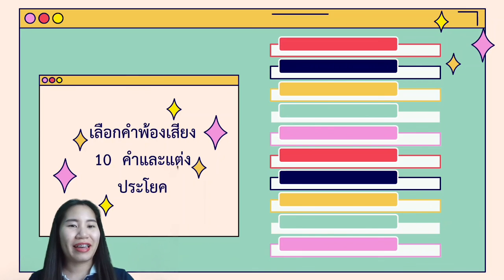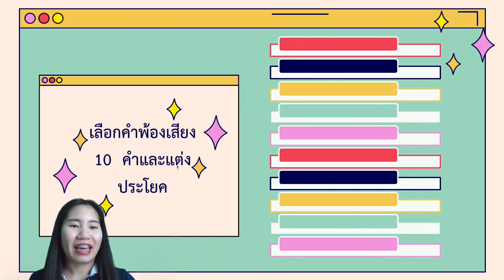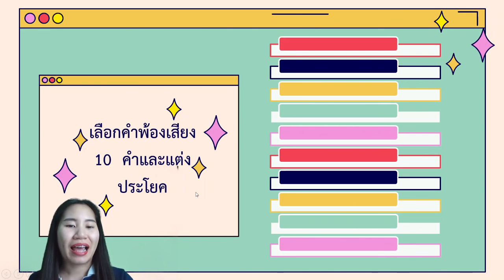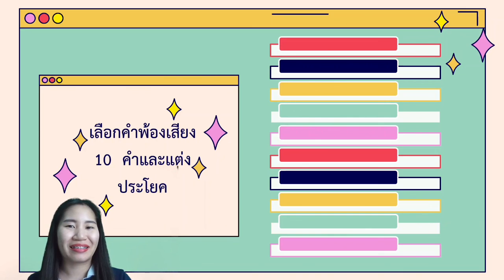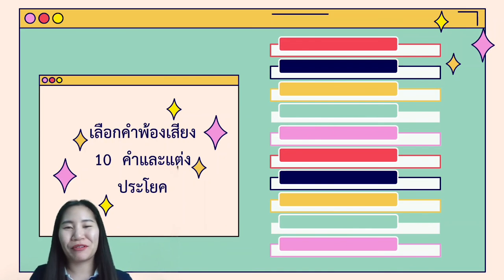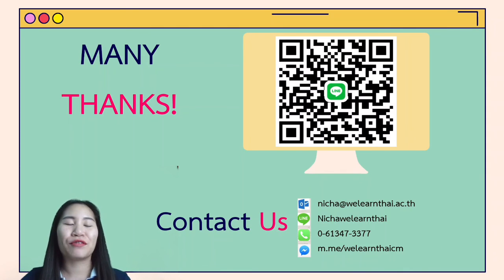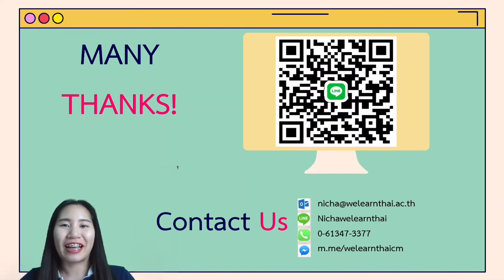And here is your homework: เลือกคำพ้องเสียง 10 คำ และแต่งประโยค — choose 10 homophone words and make sentences. Don't forget to submit your homework, I will wait for it. I hope you enjoyed our lesson. If you have any questions, feel free to reach out to your teacher. See you next lesson, bye-bye!